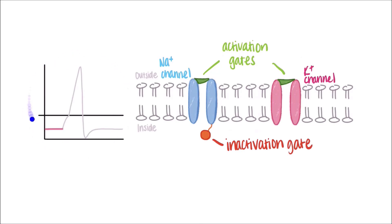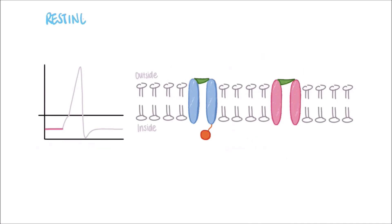I have also drawn the corresponding graph of voltage versus time on the left. Let's start with the resting state. When no action potential is firing, both of the activation gates are closed, while the sodium channel inactivation gate is opened. No ions are flowing through these channels, and the voltage remains at roughly negative 70 millivolts.